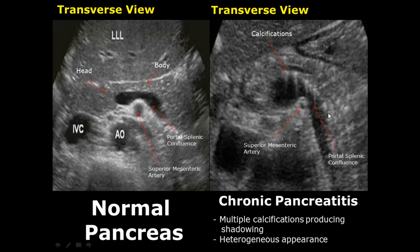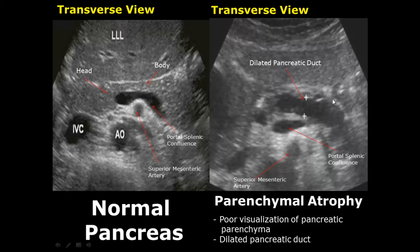Chronic pancreatitis may lead to atrophy of the pancreatic parenchyma — we do not see much of the parenchyma; we don't really see the body or the head as much as we should. We also see a dilated pancreatic duct; the diameter of this pancreatic duct is definitely more than three millimeters.